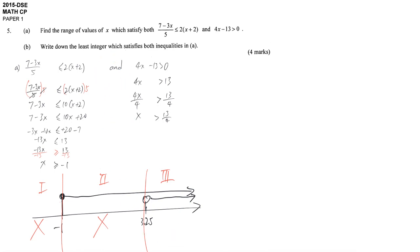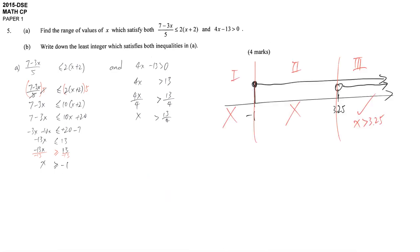That's why our solution, our simplified version, is region 3. And region 3 is just x larger than 3.25. Before we finish part A, write down: therefore x is larger than 13 over 4, or you may write x larger than 3.25. Don't just leave it like this. It's not your final answer. Your final answer should be simplified.